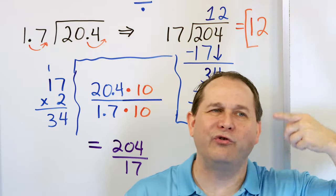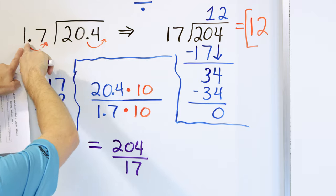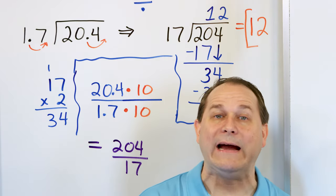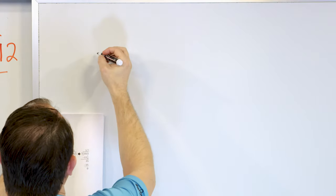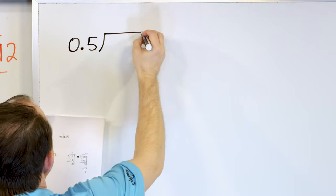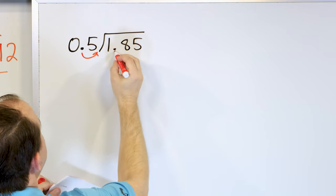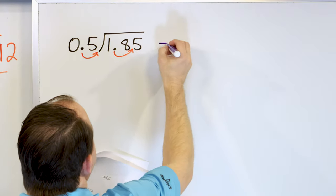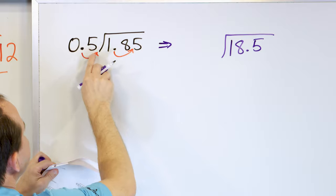For future problems, we're not going to do so much thinking about it. What we are in practice going to do is move the outside decimal point to the right to give us a whole number, and then move the inside decimal point the same number of places. Now with all that talking out of the way, we can finally work more problems. Let's say that we have the problem — we're going to divide 1.85 and divide it by 0.5.